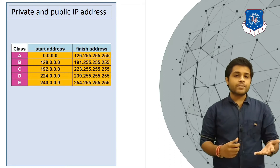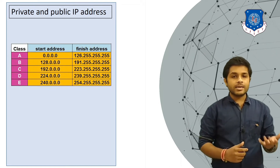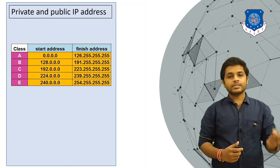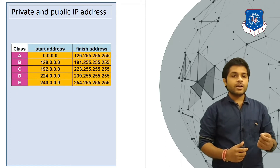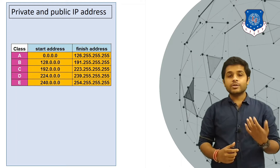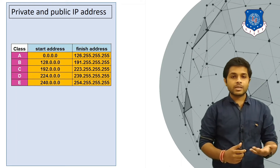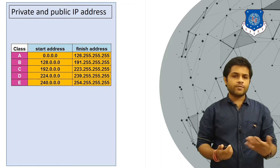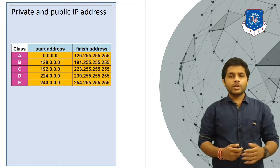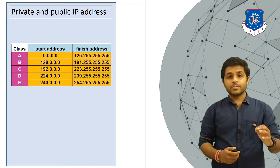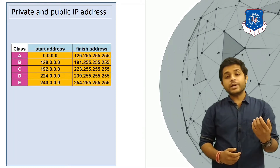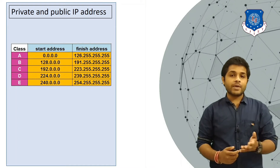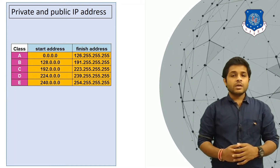The IPv4 addresses are divided into five classes: A, B, C, D, and E. Class A, B, and C are known as unicast IP addresses. Class D is for multicast and Class E is reserved for development purposes. In each class, IPv4 addresses are further divided into two categories: public and private IPv4 addresses.